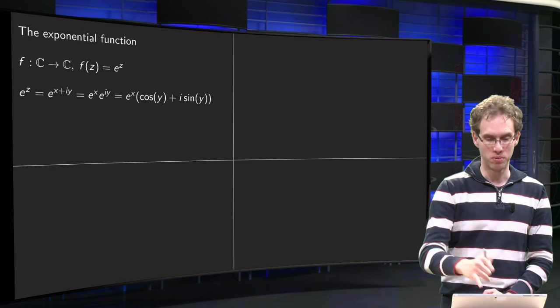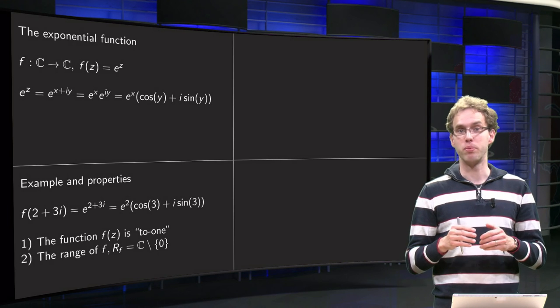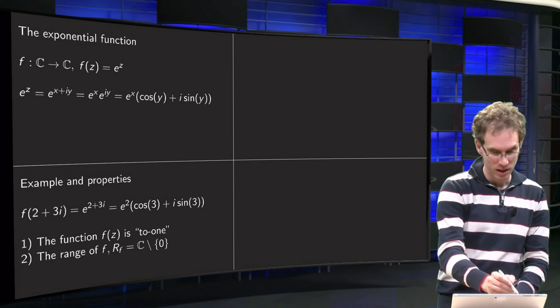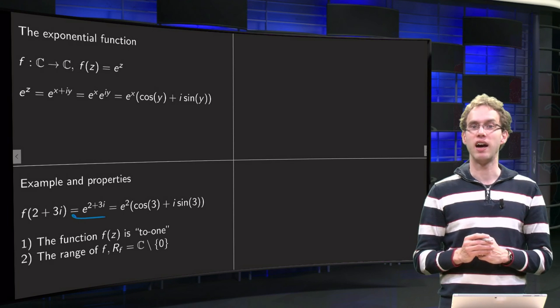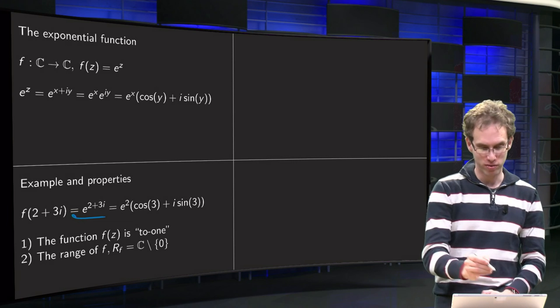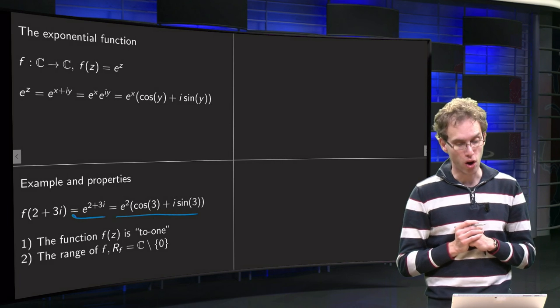Let's start to do some computations. If we want, for example, to compute f of 2 plus 3i, so we want to compute e to the power 2 plus 3i, that's e to the power 2 times e to the power 3i, and for e to the power 3i you use the Euler formula.